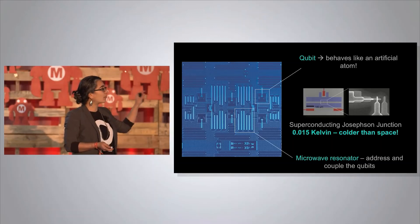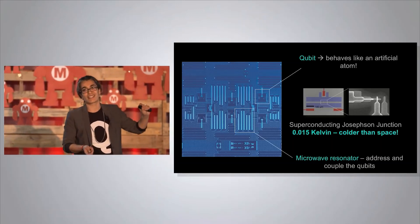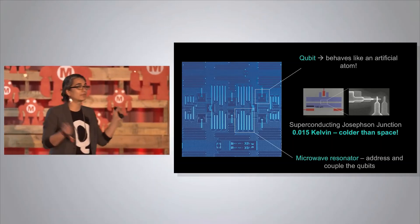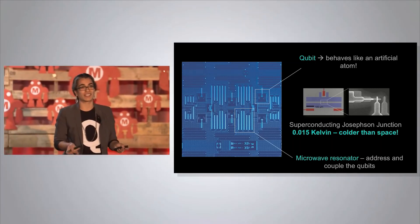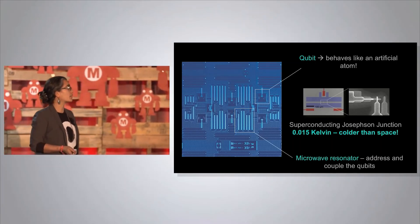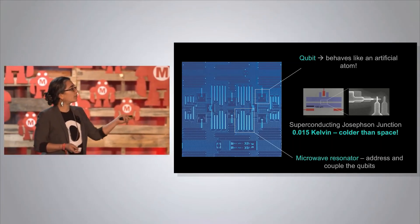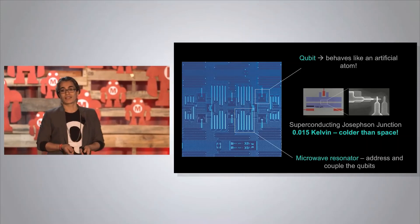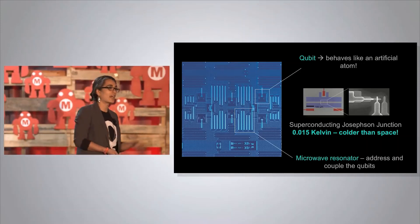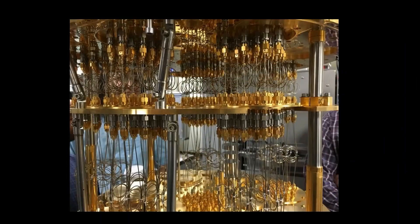We have to cool this thing down to 0.015 Kelvin, where zero is absolute zero. Room temperature is 300 — this is significantly colder than outer space. And we talk to the qubits with microwaves. This is how we talk to the qubits: inside a dilution refrigerator, we have all of these microwave cables that allow you to actually go and probe the qubits with microwaves.